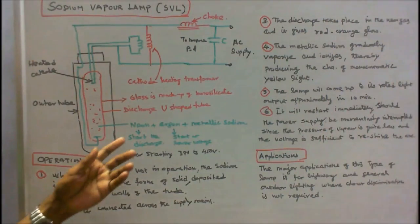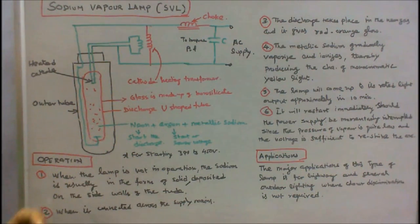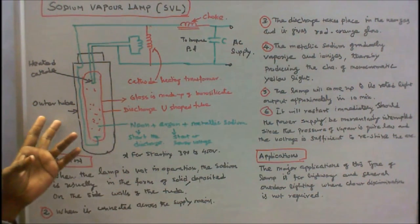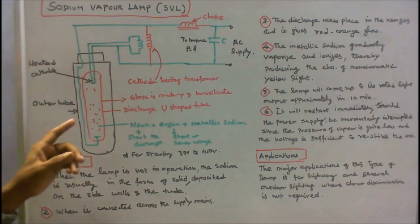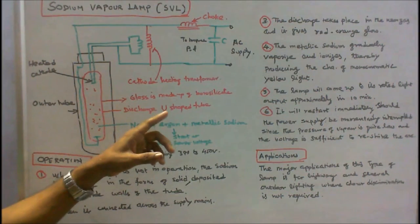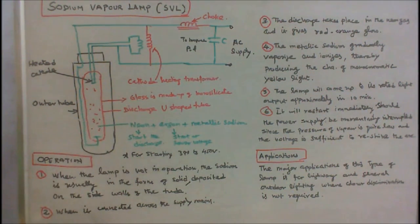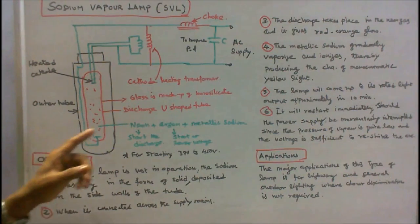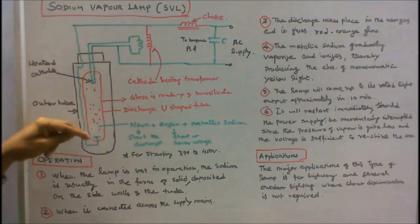This is the figure of a low pressure sodium vapor lamp. Sodium vapor lamp contains two glass tubes. One is the outer tube which is made up of ordinary glass. The inner discharge U-shaped tube is made up of borosilicate. Inside the tube, two electrodes are fitted and neon plus argon plus small amount of metallic sodium is also placed inside the discharge tube.